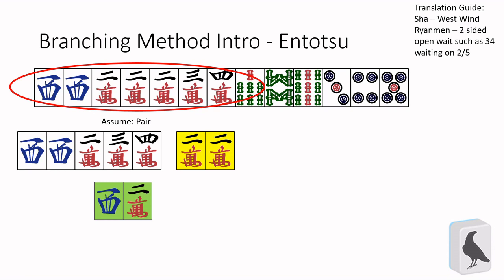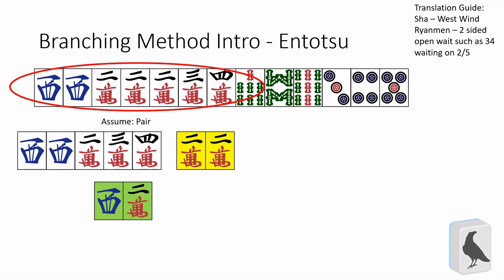Next, with the triplet side, we can see the sha has to be our pair, as it's the only option we have when we isolate the triplet completely. Because of that, we're left with the three-four ryanmen, which waits on the two-mon and five-mon, so the shape also waits on two-mon and five-mon.